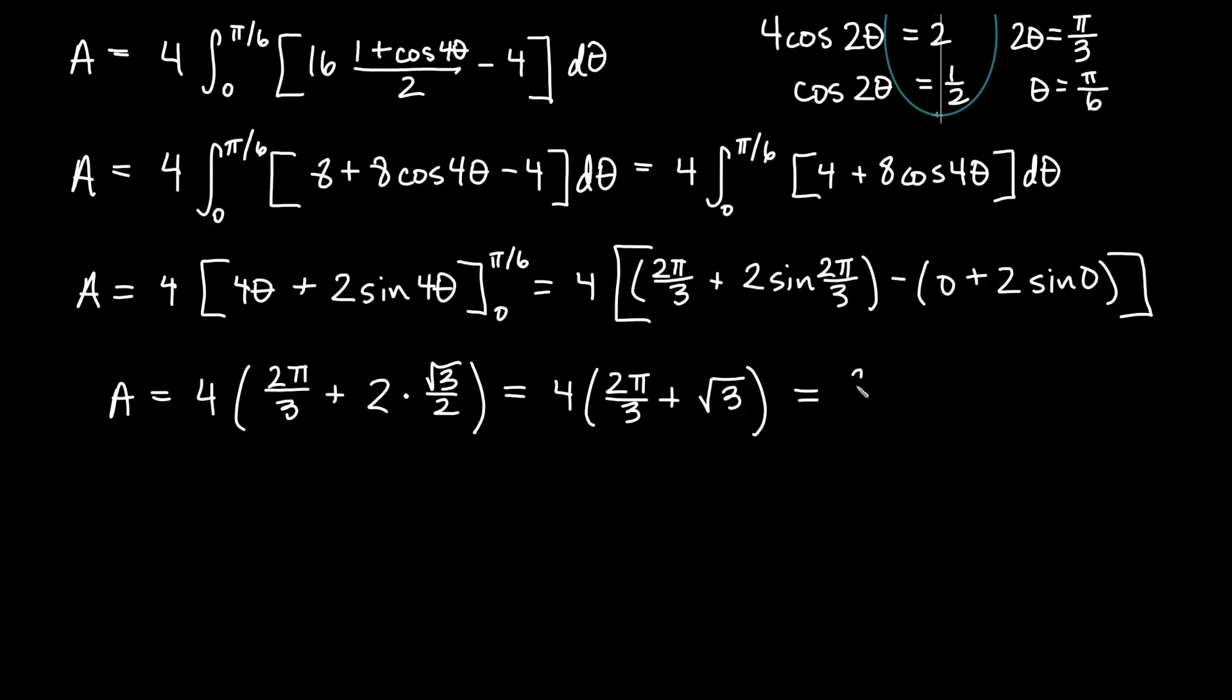Now we could leave it that way. We could distribute the 4. You could say 8 pi over 3 plus 4 root 3 if you want. If you really care I guess you could get a common denominator and write it all in one fraction. I don't think we care that much. We'll go ahead and just leave it that way. 8 pi over 3 plus 4 root 3 square units of area inside of our rose-shaped graph but outside of the circle here.